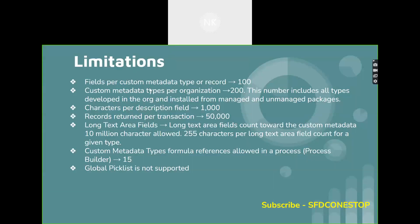Let's talk about the limitations of custom metadata. Fields per custom metadata type or record: the limit is 100. Global picklist values are not supported. Custom metadata types per organization: maximum 200. Characters per description field: 1000. Records written per transaction: 50,000. Custom metadata type formula differences allowed in Process Builder: only 15. There are also certain limitations for long text area fields. These are the limitations of custom metadata.